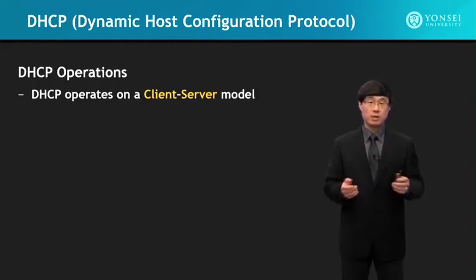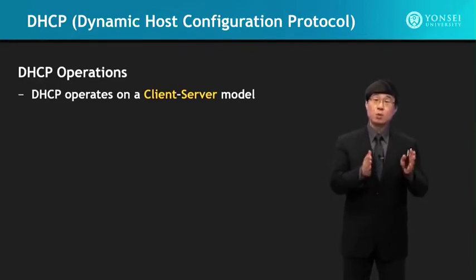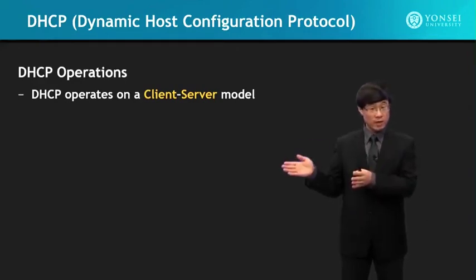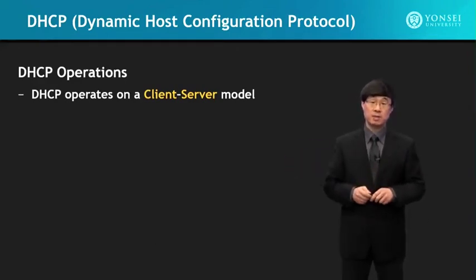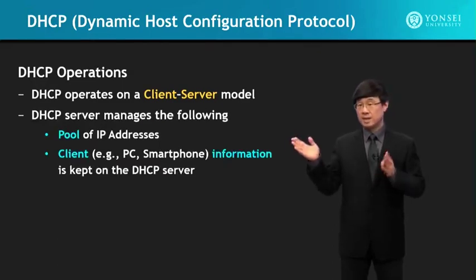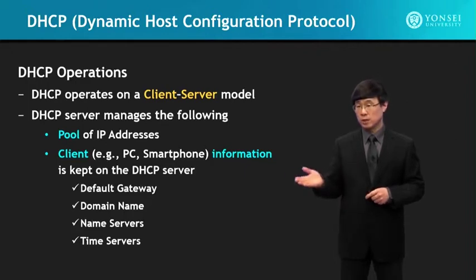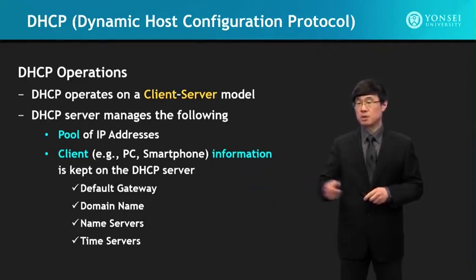DHCP operates on a client-server model. The client is your PC, laptop computer, or smartphone, and the server is the DHCP server. The DHCP server manages a pool of IP addresses, in addition to client information which includes the default gateway, domain name, name servers, and time servers.